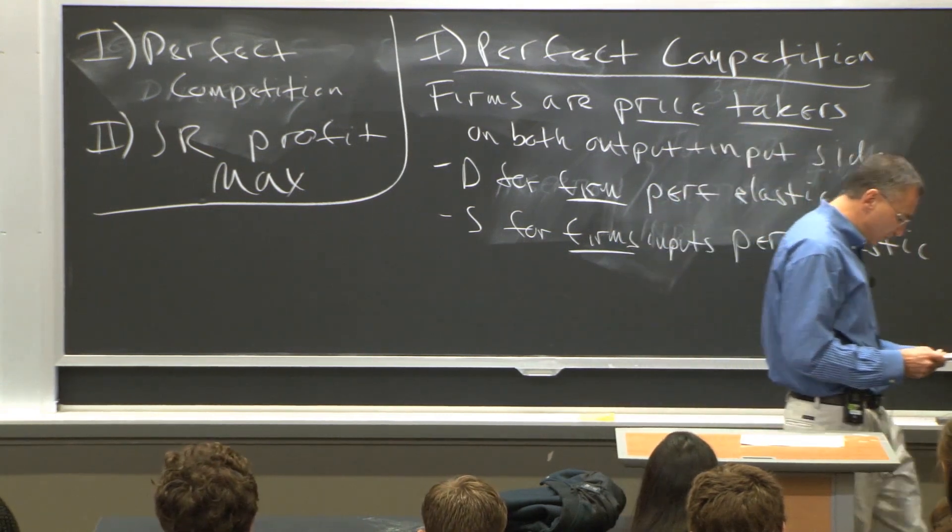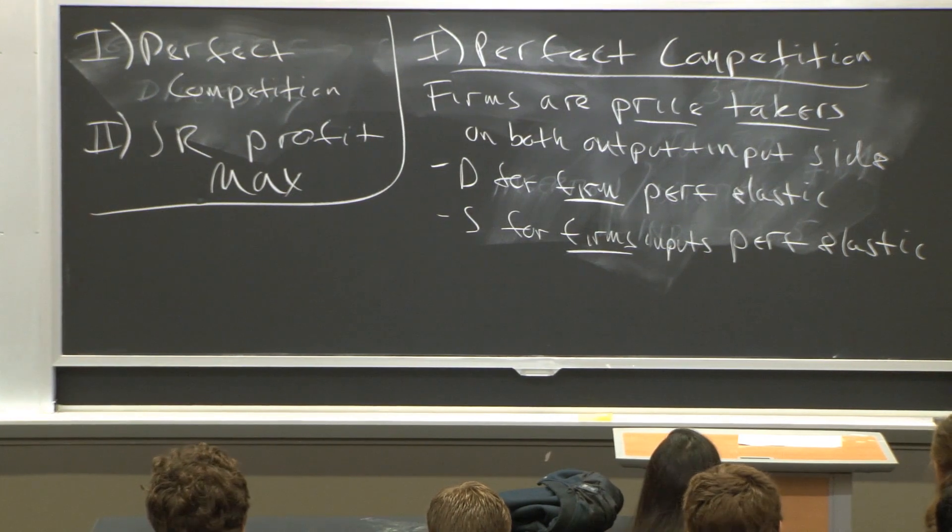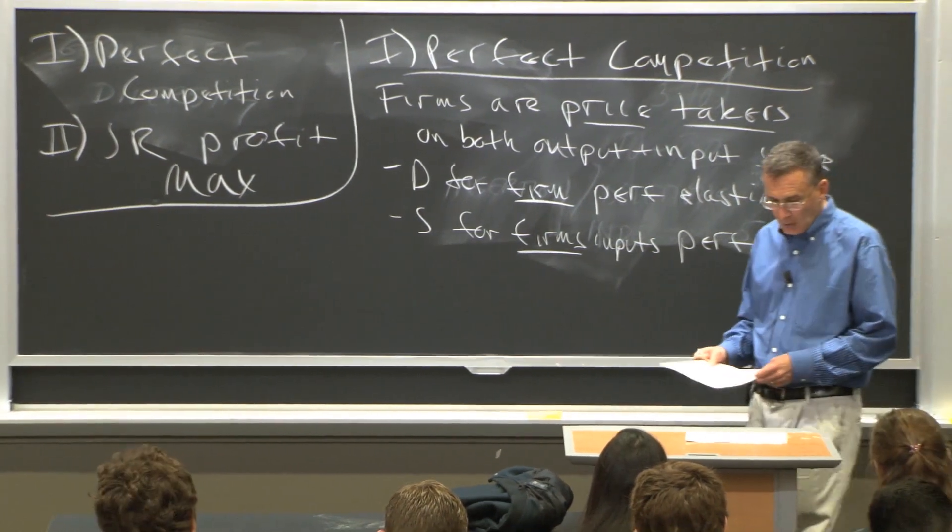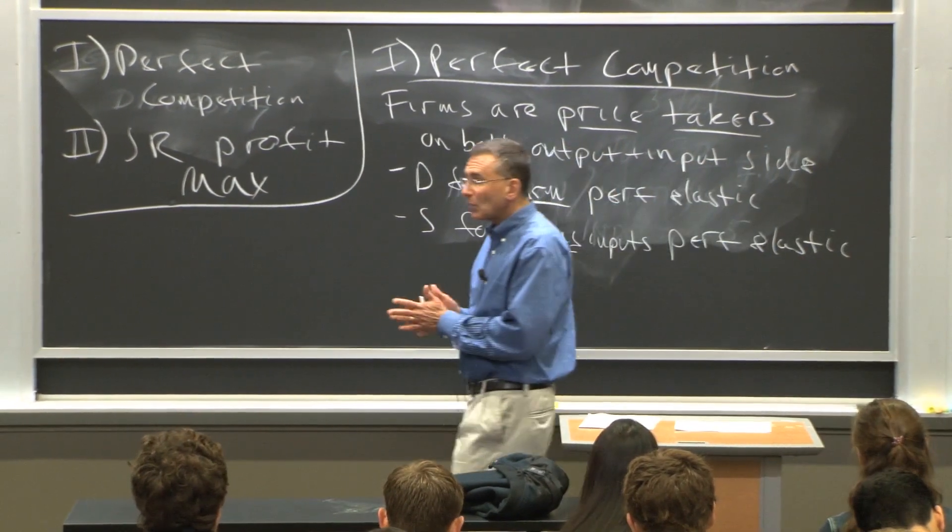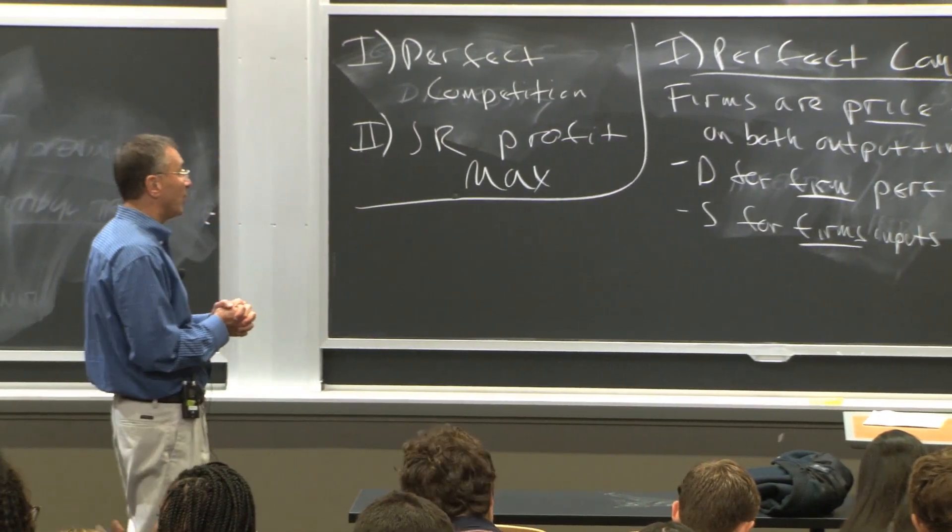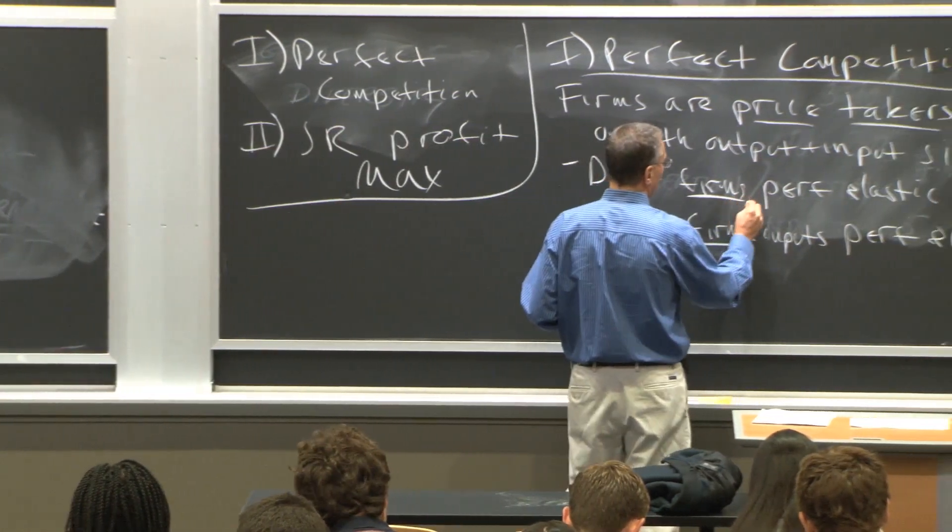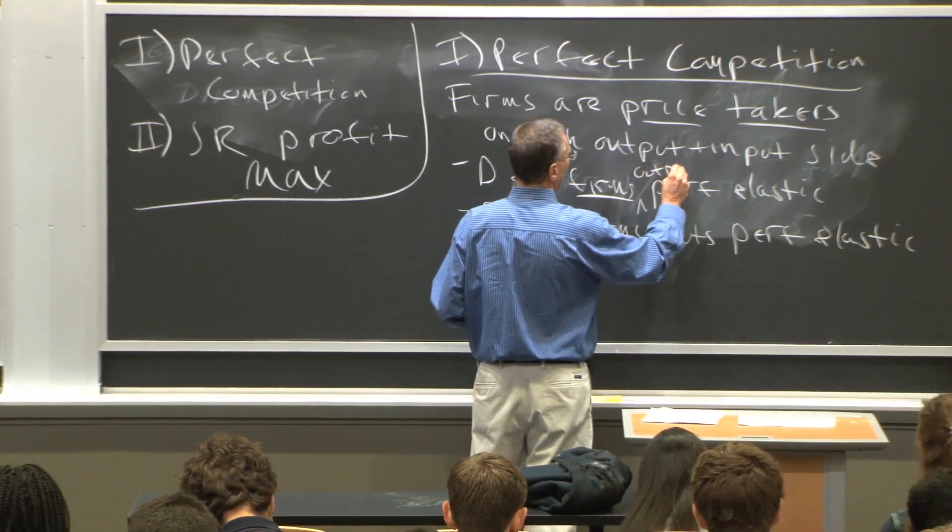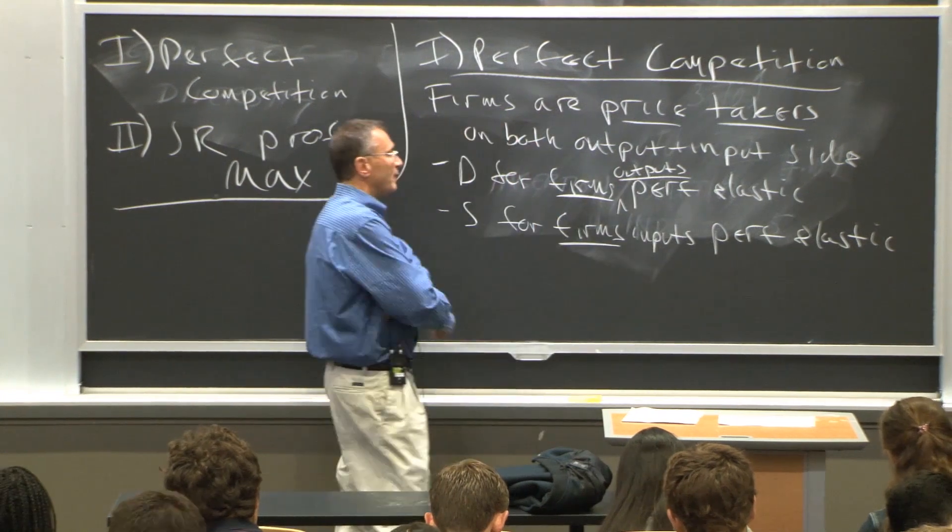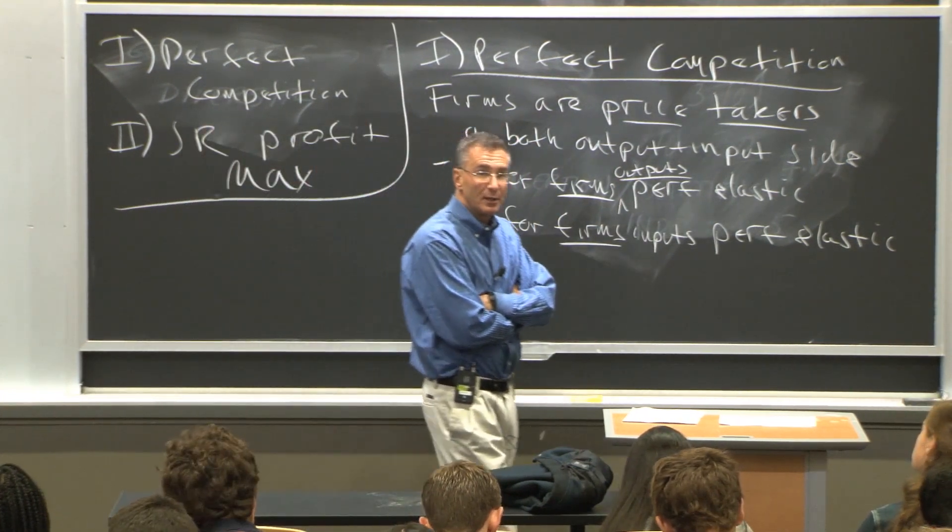And the supply for the firm's inputs is perfectly elastic. So those are the conditions under which we will have perfect competition. The demand for the firm's outputs is perfectly elastic, and the supply of the firm's inputs is perfectly elastic.